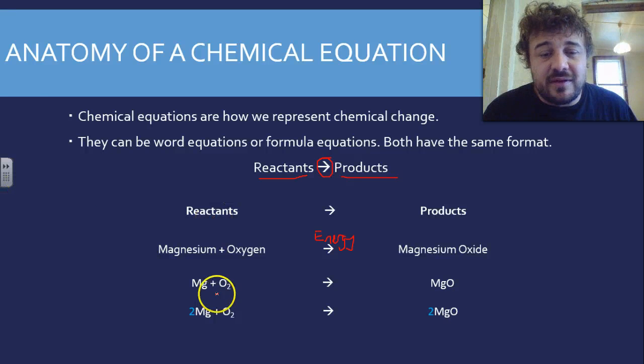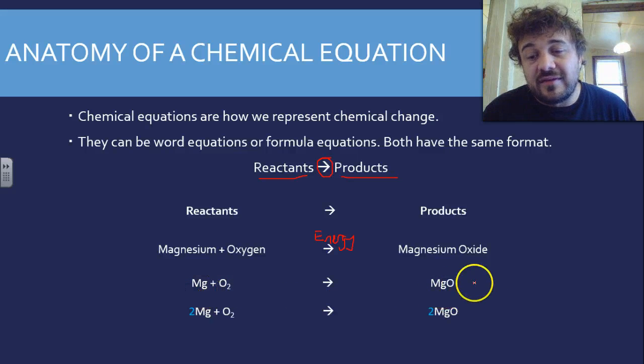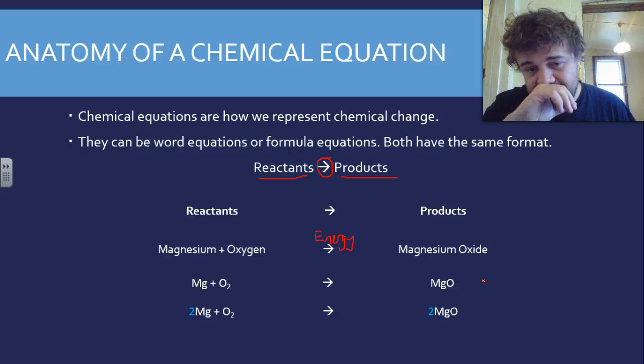If we were to run with this equation as is, we would only use up about half of the oxygens. You've got two oxygens, one magnesium, but there's going to be an extra oxygen floating around, and it won't do that.